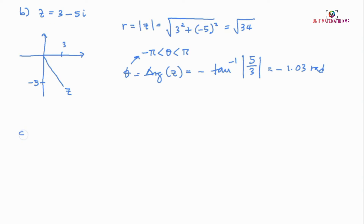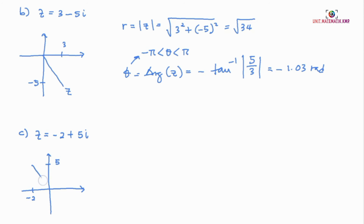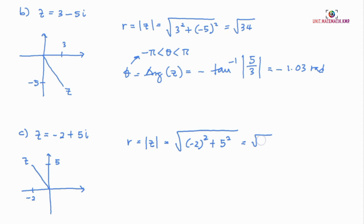For example C, Z equals negative 2 plus 5i. We draw the X and Y axes. The real part is negative 2 and the imaginary part is positive 5, giving us Z on the Argand diagram. To find the modulus Z, we take the square root of negative 2 squared plus 5 squared, which gives us the square root of 29.